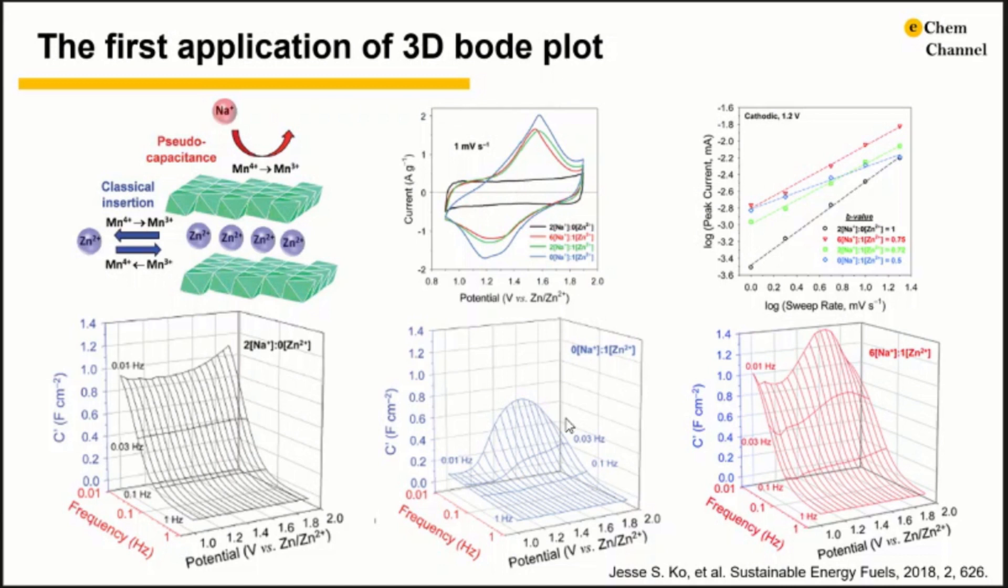In zinc ion based electrolyte at lower frequency, capacitance maximizes near 1.5V. The maximum points quickly fall with either higher frequency or with different potentials.